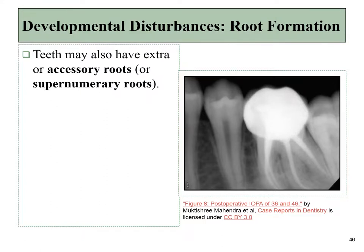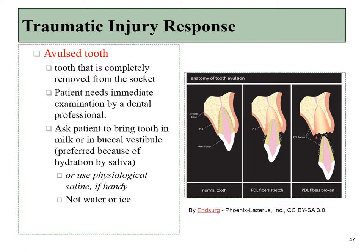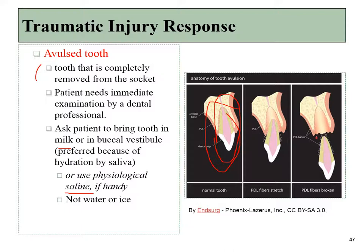Sometimes teeth will have more roots than they should; these are called accessory or supernumerary roots. An avulsed tooth is one completely removed from its socket. When this occurs, it is important to keep the tooth in an environment as similar to the oral cavity as possible — such as placing it back in the patient's buccal vestibule, since saliva provides nutrients keeping pulp cells alive — or storing it in milk or special transport saline until a dental expert can reinsert it into the socket.